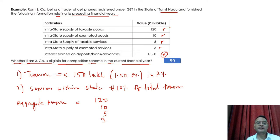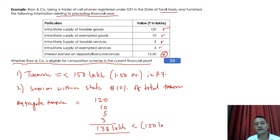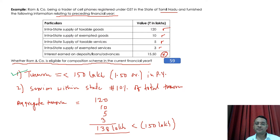Interest earned on deposits, loans, or advances is not added in the calculation of aggregate turnover. So the total aggregate turnover comes to 138 lakhs, which is within the limit of 150 lakhs. Therefore, the first condition is satisfied — the total turnover is not more than 150 lakhs during the previous year. Now we move to check the second condition: services within the state should be 10 percent of total turnover.